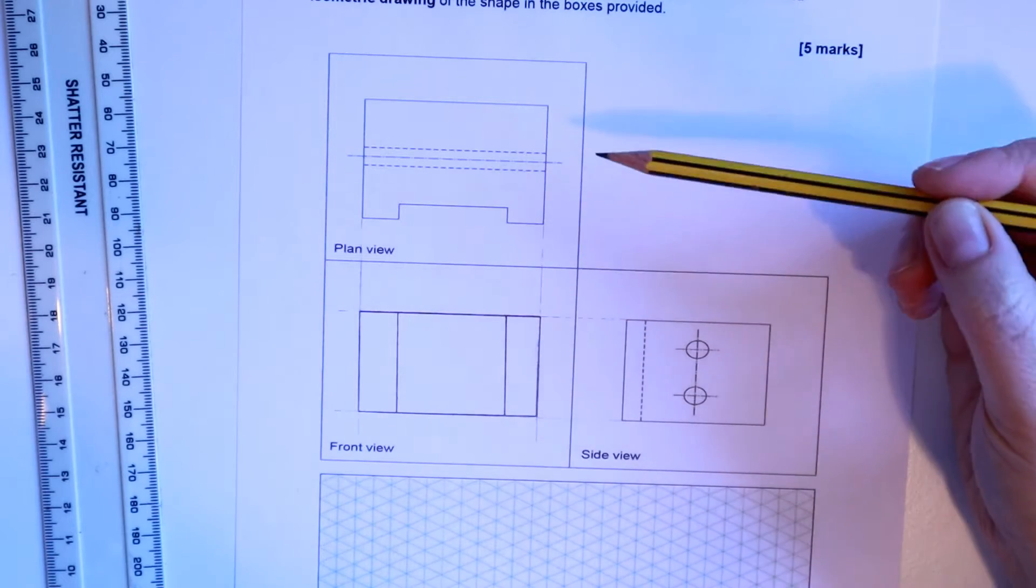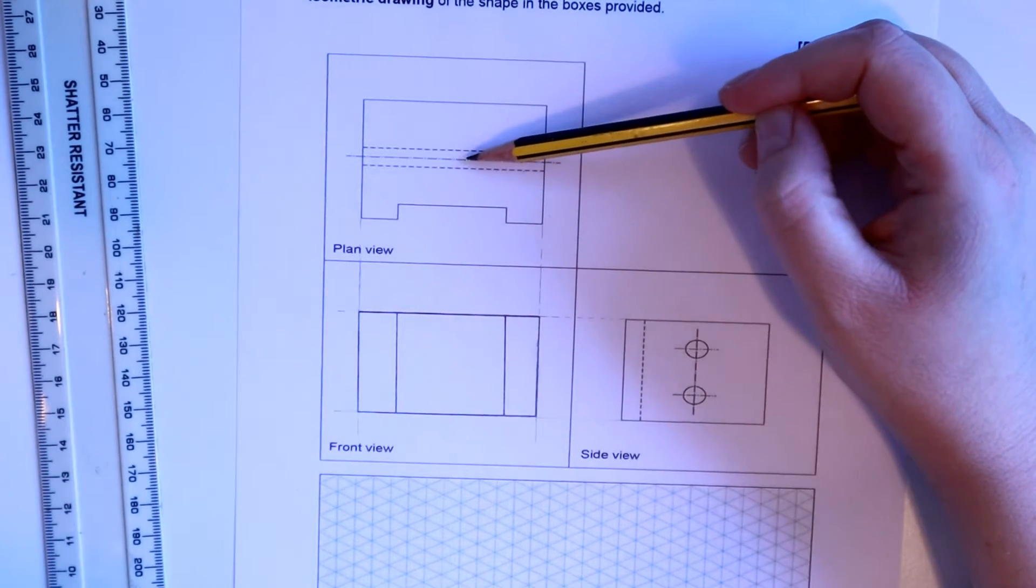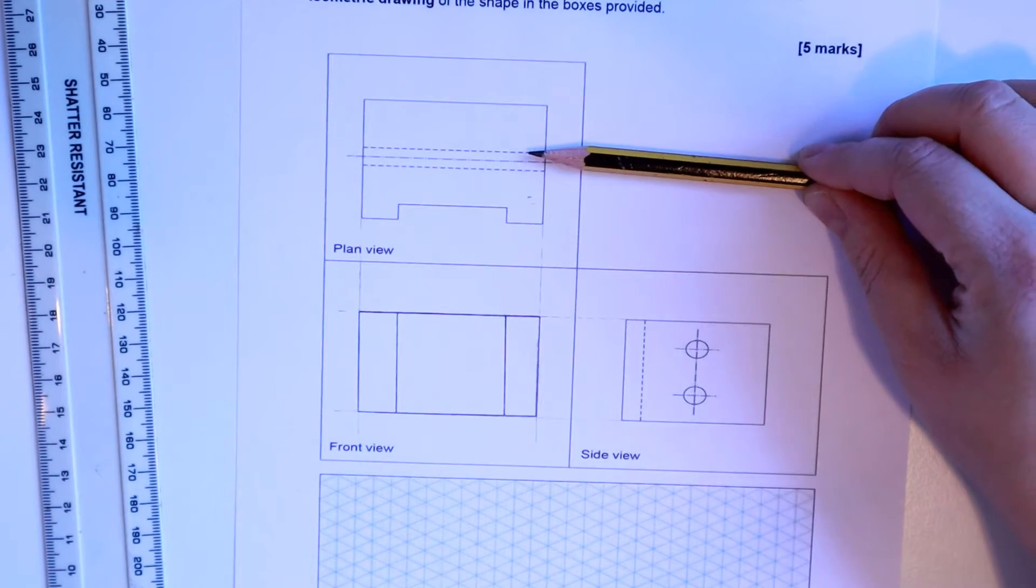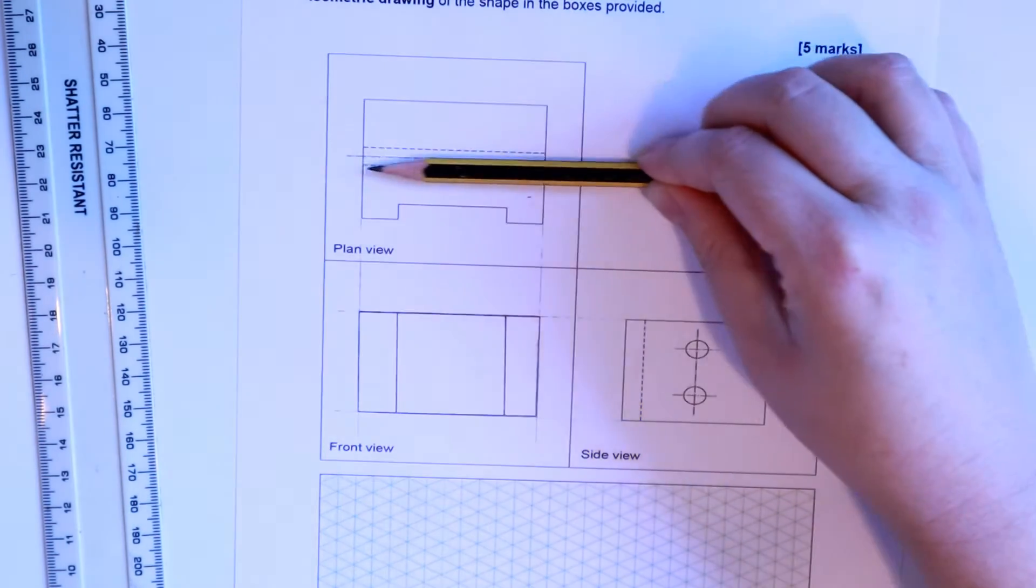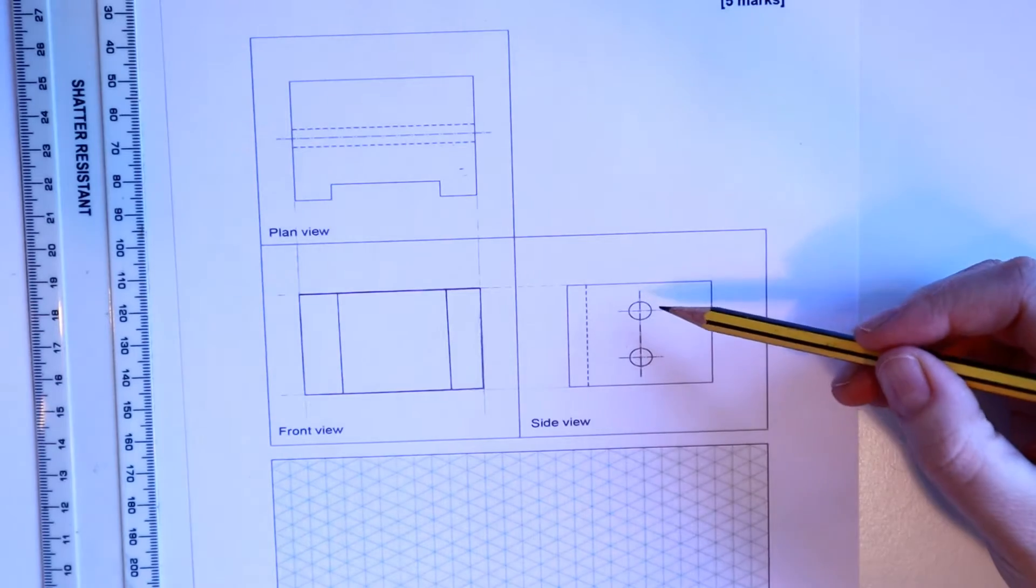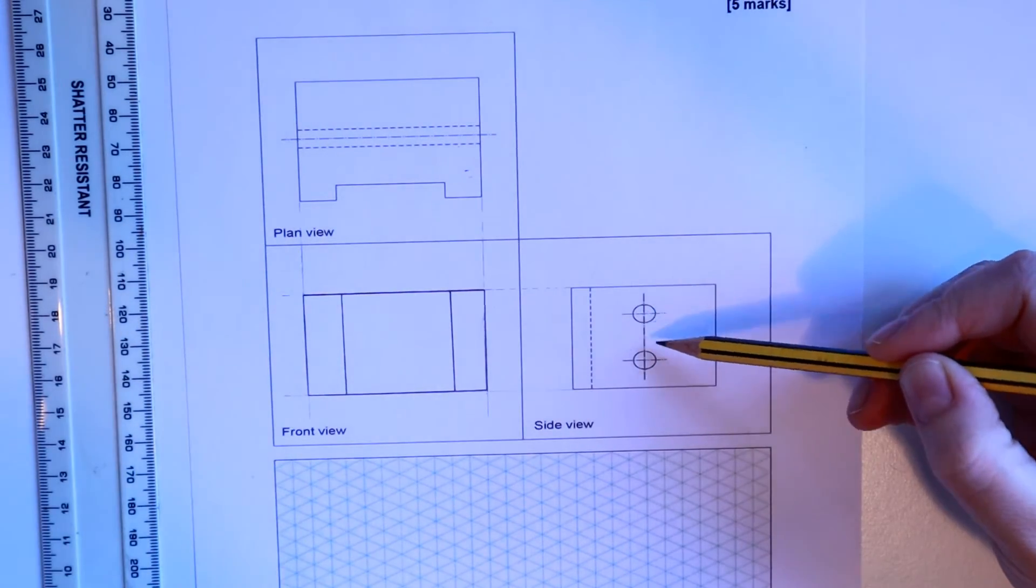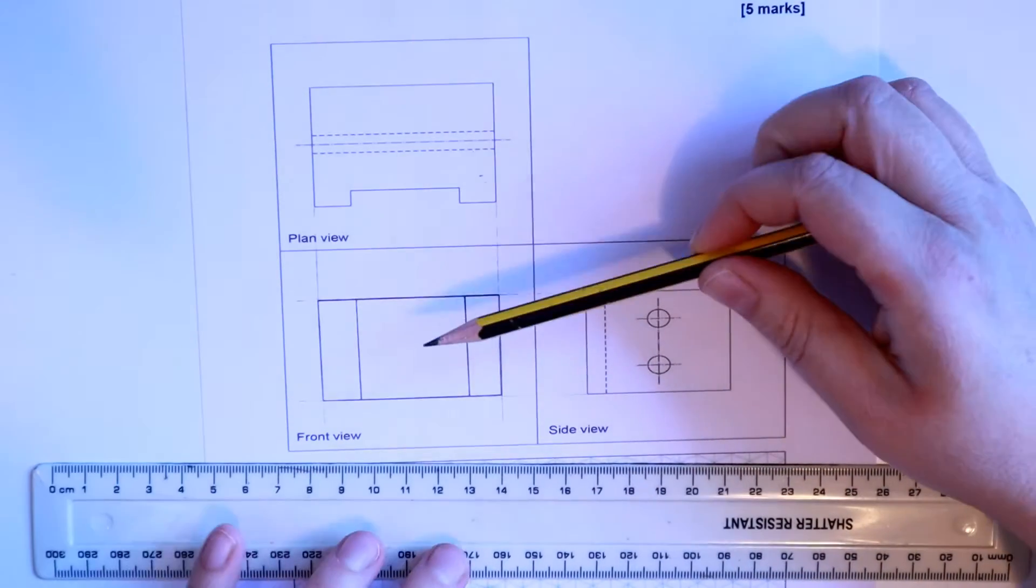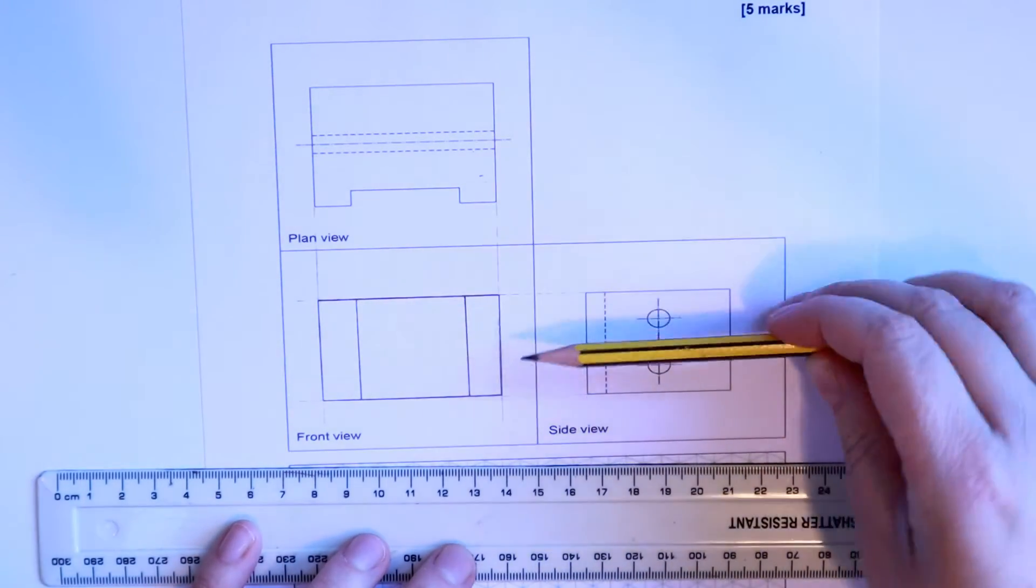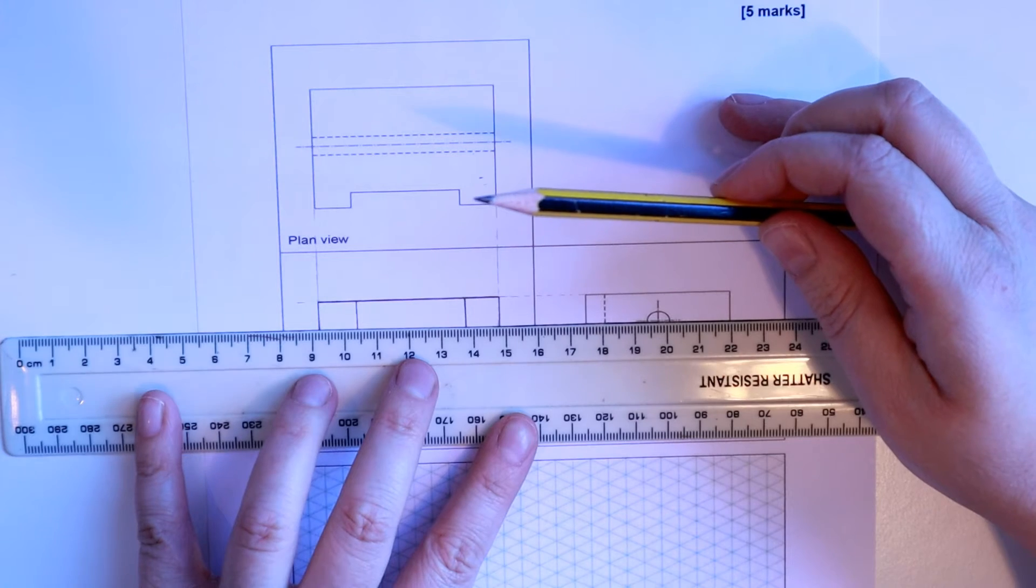We've also got on here some hidden details. Hidden details are shown on the plan view. There's basically drill holes that go all the way through, I can see, because I can see the side view. And when you can see a circle with a cross over it, that represents a drill hole. So I'm not going to be able to see it on the front view because it's actually coming in from the side. So I need to show this as hidden details.